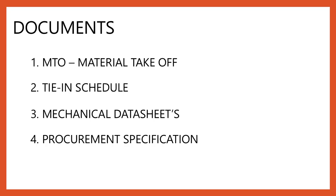The third important document is the mechanical data sheet. Data sheets are prepared for valves, strainers, and piping specialty items, and must be submitted along with the final submission. The fourth document is procurement specification — a specification used for the procurement of an item such as a valve, strainer, or any piping specialty item. Based on the requirements listed in the procurement specification, the items will be purchased.